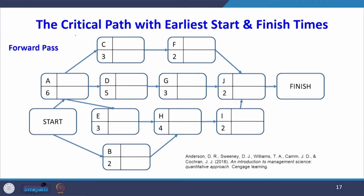Now we find earliest start and earliest finishing time using the forward pass method. We start from 0. Activity A gives 0 + 6 = 6. Then 6 + 3 = 9, 6 + 5 = 11, 6 + 3 = 9. For B: 0 + 2 = 2. Then 9 + 2 = 11, 11 + 3 = 14. For activity H, there are two ways to reach it — values 9 and 2 — so we take the largest: 9 + 4 = 13.